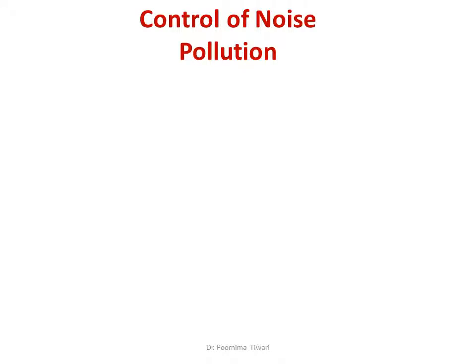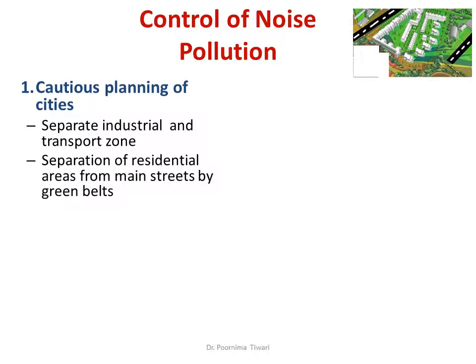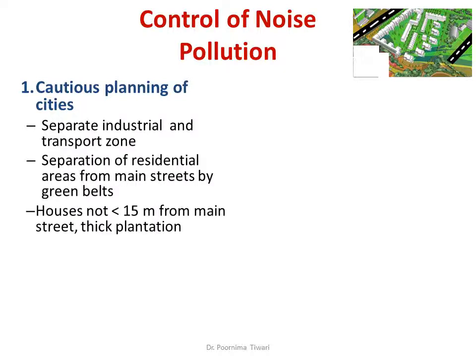How can we control noise pollution? Through planning: in the planning stages of cities, we can designate separate industrial and transport zones separated from residential areas. Residential areas should be separated from main streets by green belts. Houses should not be less than 15 meters from a main street with heavy traffic, and that 15-meter distance should have thick plantation of trees and bushes to absorb sound.